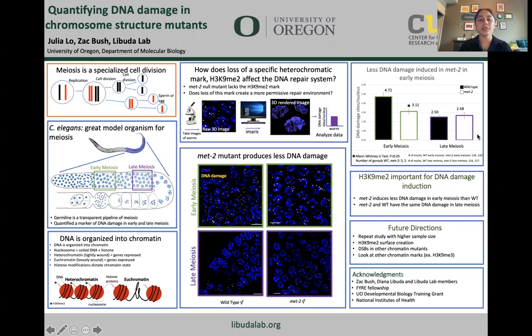Meiosis is a specialized cell division that results in haploid sperm and eggs. Meiosis is characterized by one round of DNA replication, followed by two rounds of cell division.